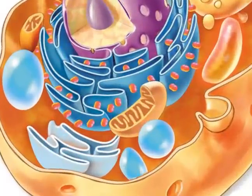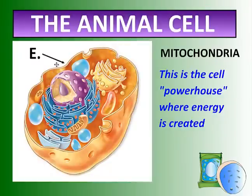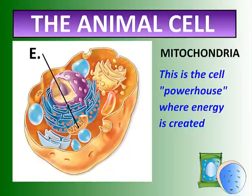The last part of the animal cell is something called mitochondria — mitochondria. This is what we call the powerhouse of the cell, and this is where energy is created. This allows the cell to maintain and perform its daily functions using the energy generated by that jellybean-looking structure. Mitochondria.